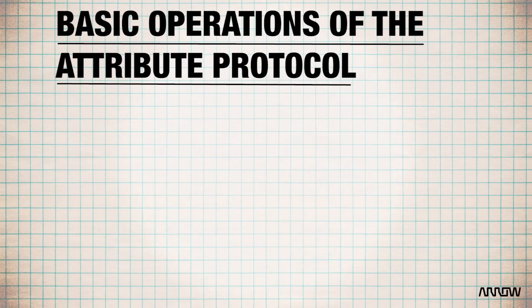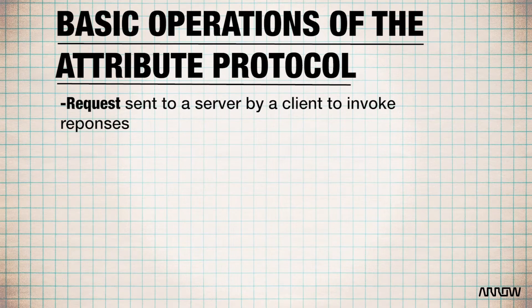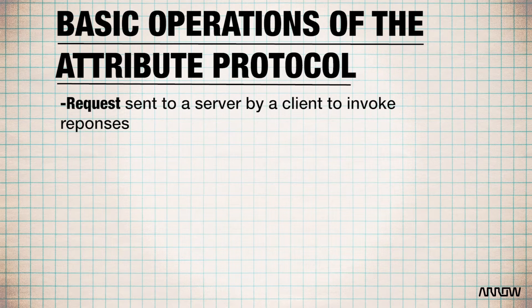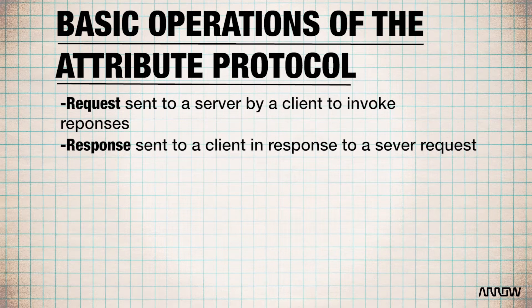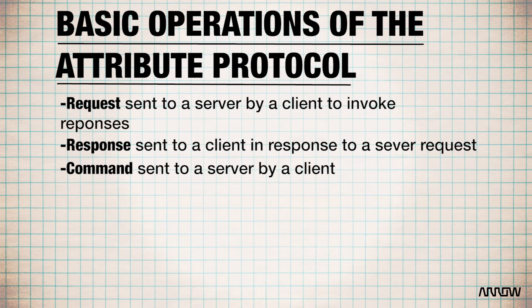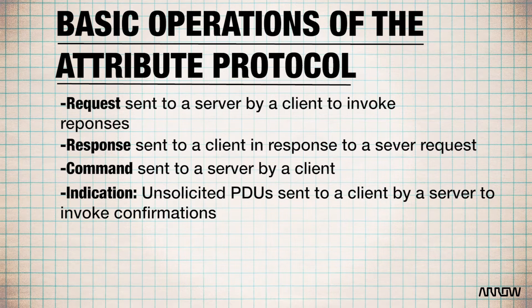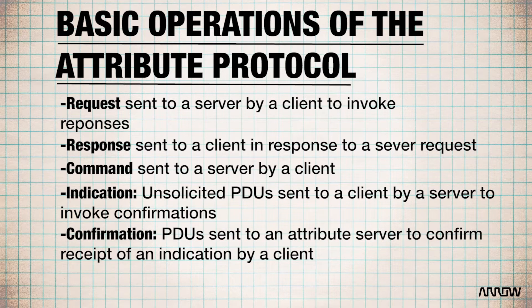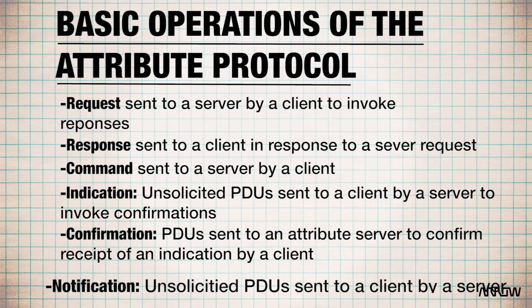The Attribute Protocol has six basic operations. A request is sent to a server by a client and this invokes a response. A response can be sent to a client in response to a request to a server. A command is sent to a server by a client. Indication unsolicited PDUs are sent to a client by a server and this invokes confirmations. Confirmation PDUs are sent to an attribute server to confirm receipt of an indication by a client. Notification unsolicited PDUs are sent to a client by a server.